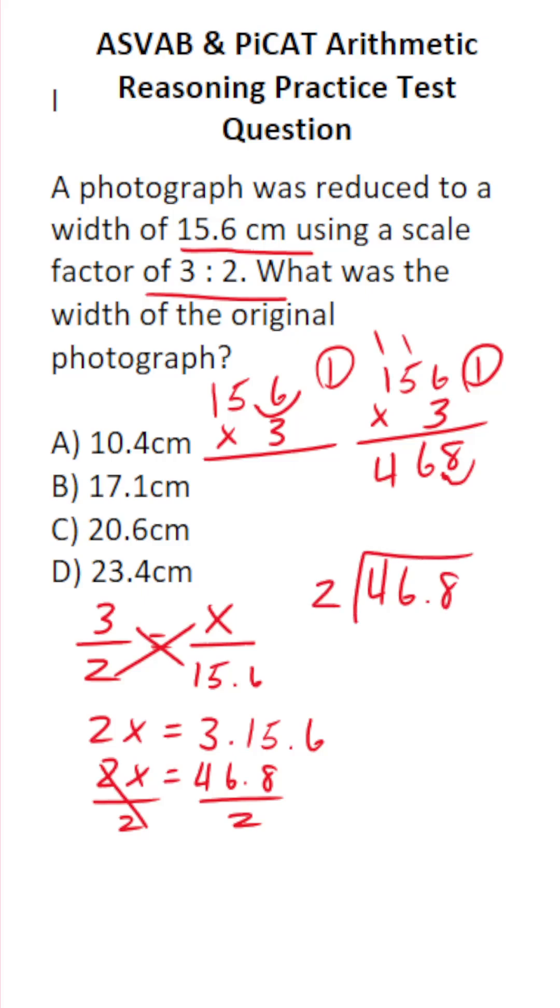And you can do this one mentally. This one's very easy to do. Four divided by two is two. Six divided by two is three. Put our decimal there. Eight divided by two is four. So its original width is D, 23.4 centimeters.